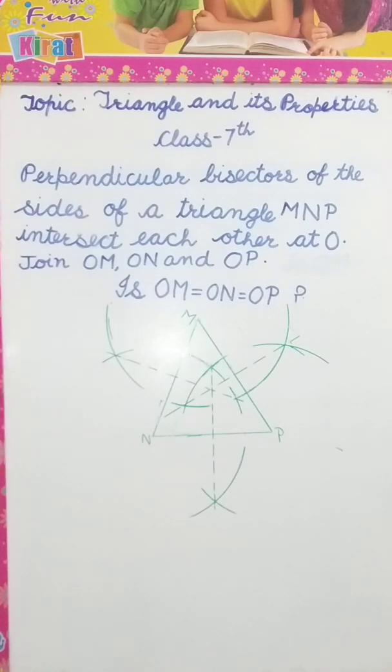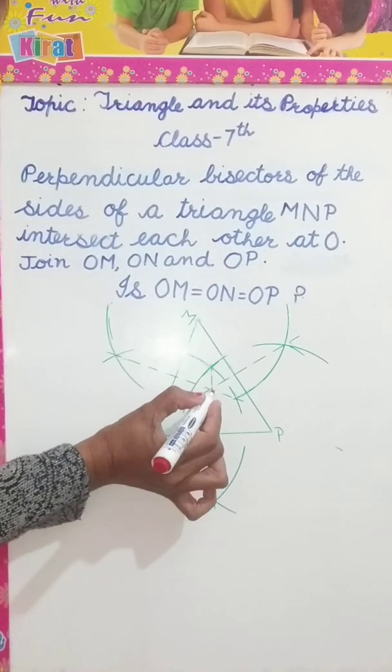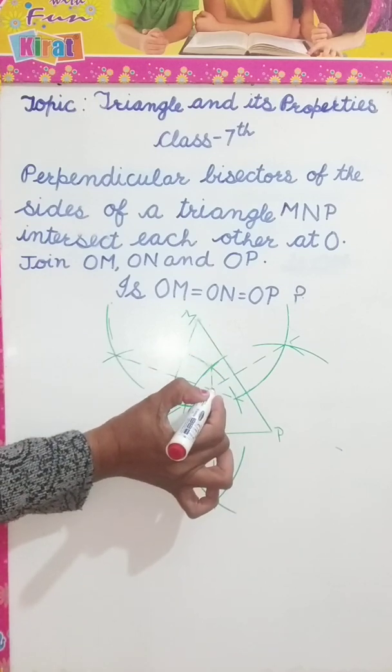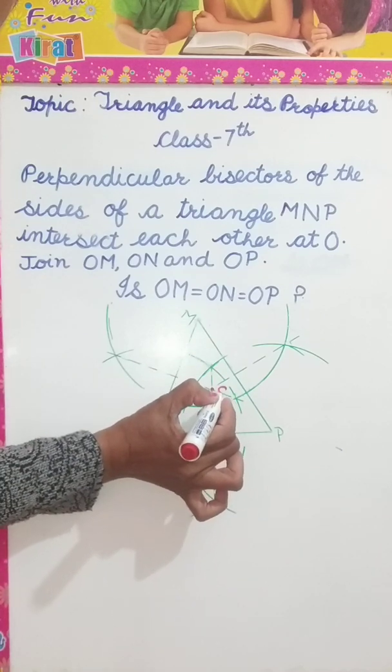Now, it is given join OM, ON and OP. Let's join them. This is point O. This is point O, where all these three perpendicular bisectors intersect, this point is O point.